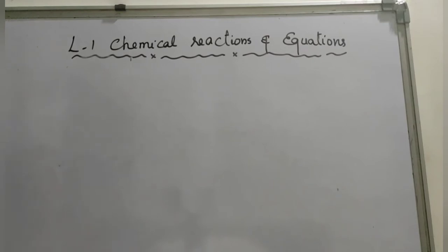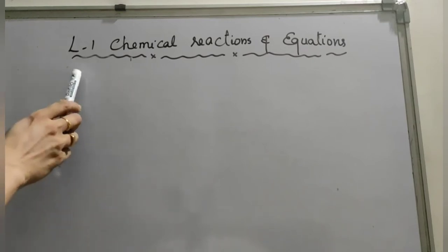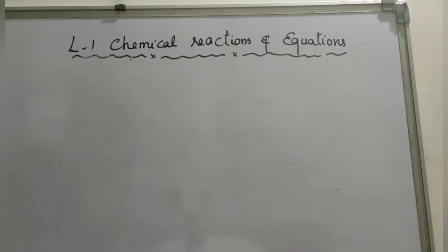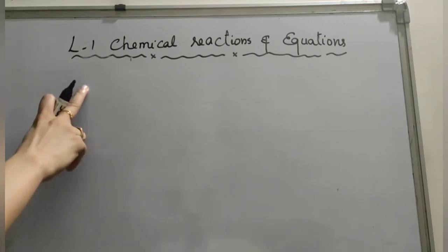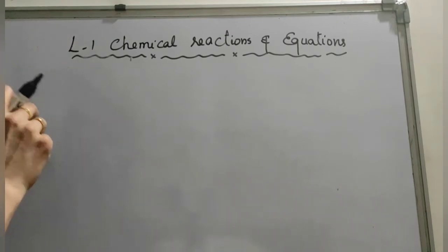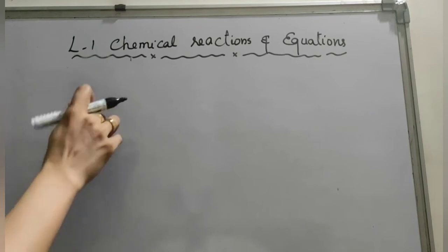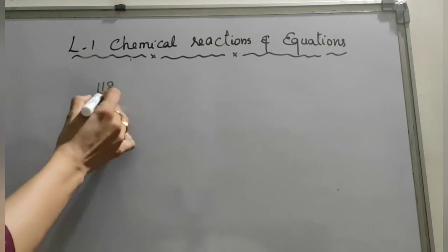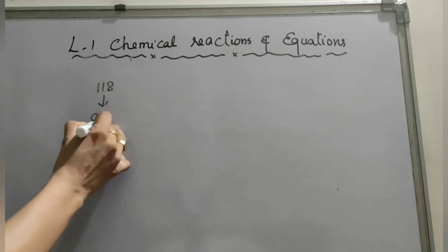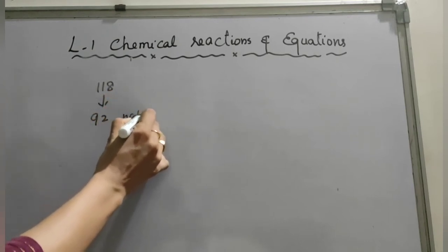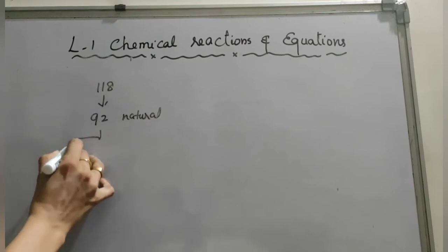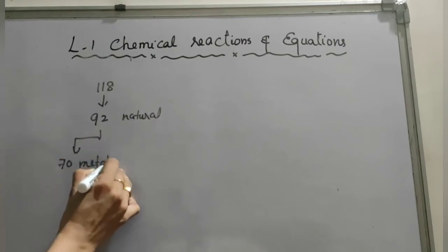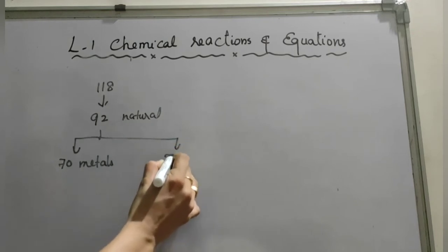Welcome back to our YouTube channel. Today we are going to discuss lesson number one: chemical reactions and equations. Before learning this lesson, you should know about some ionic states of elements. We know that there are 118 elements, out of which 92 elements are natural.